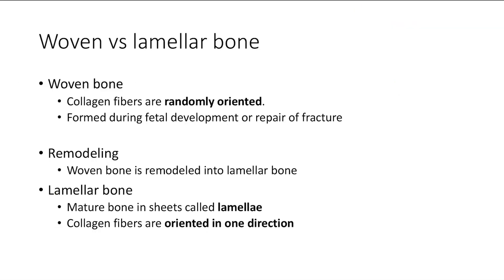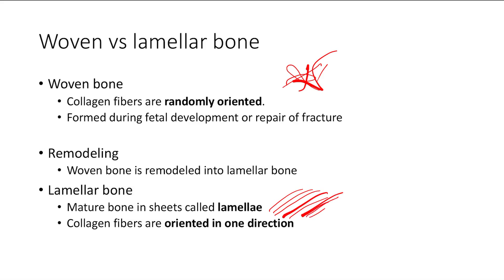Now let's go into woven versus lamellar bone. This is somewhat low-yield, but it's nice to understand. Woven bone has collagen fibers randomly oriented, and it is formed during fetal development or repair of a fracture. It is then remodeled into lamellar bone: osteoclasts break it up, and osteoblasts build a new, nicely organized matrix. Lamellar bone is organized in nice sheets called lamellae, with collagen fibers oriented in one direction — very organized.